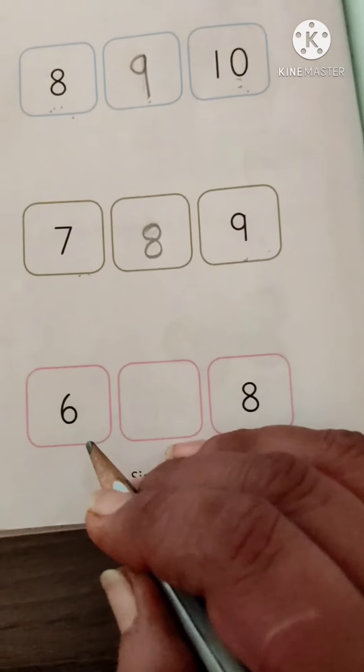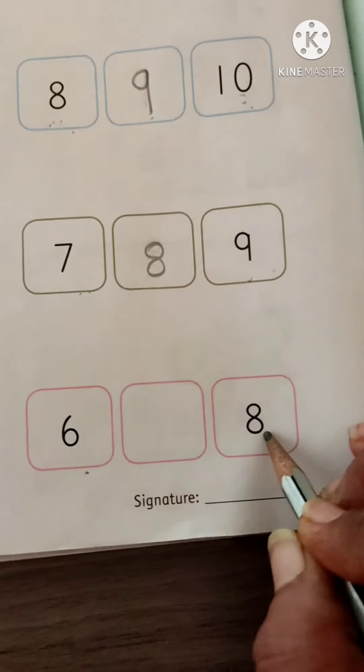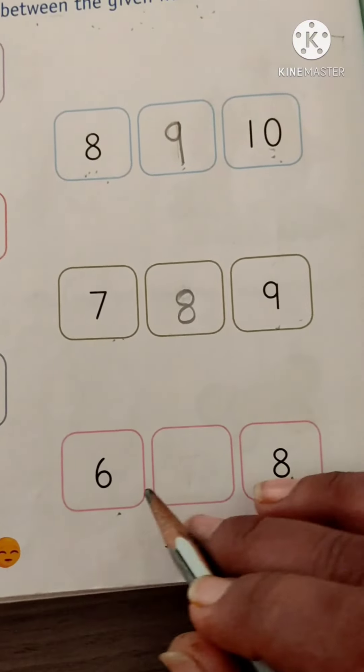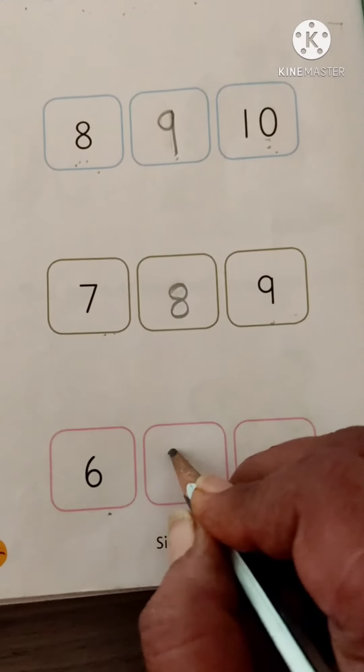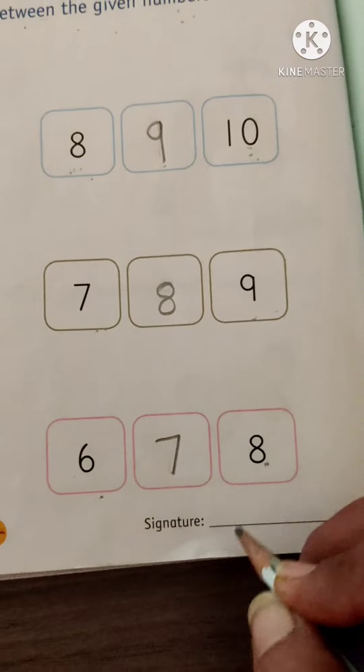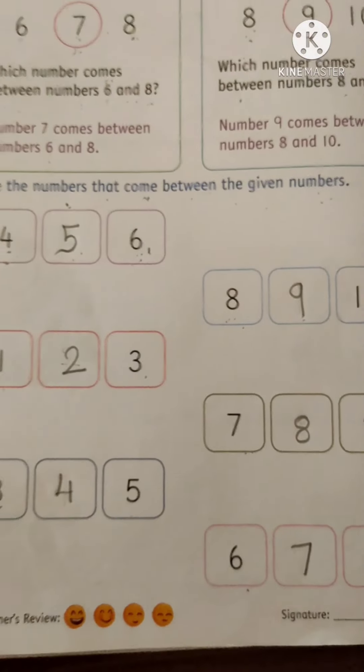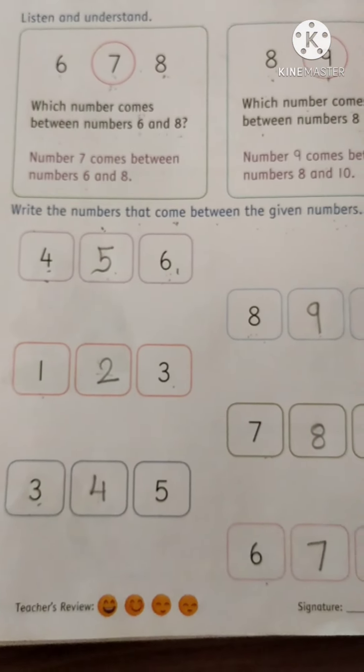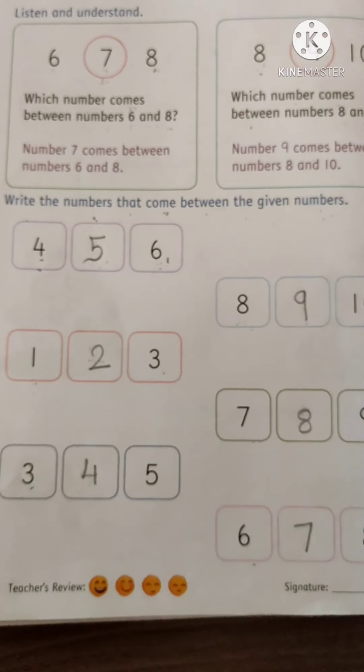Now, see. 6 and 8. Which number comes between 6 and 8? 7. So, we can say 6, 7, 8. Got it? Do practice at home. Thank you. Bye-bye.